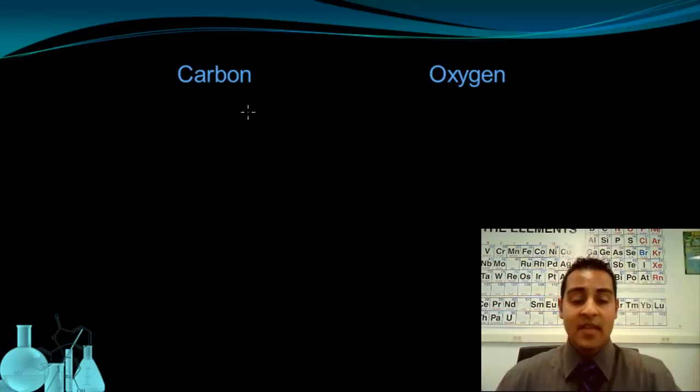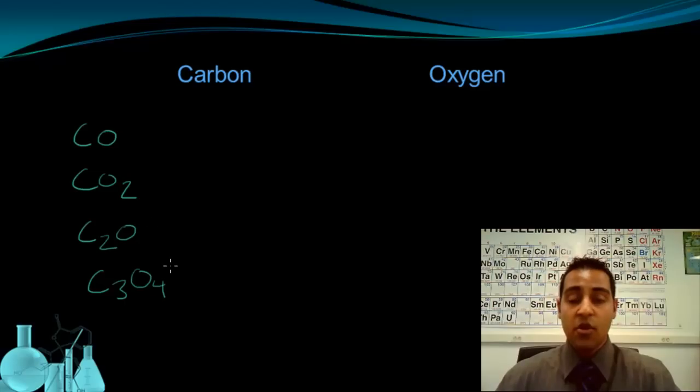We're going to look at some hypothetical examples of compounds made of carbon and oxygen so we can see how to name these compounds. Here we have several combinations of carbon and oxygen in single molecules. We have CO, one of each, CO2, C2O, C3O4.